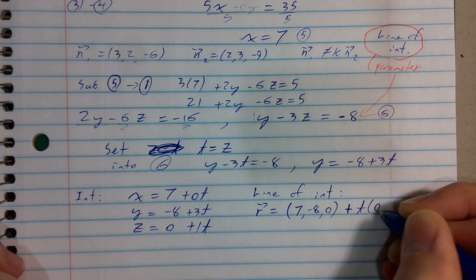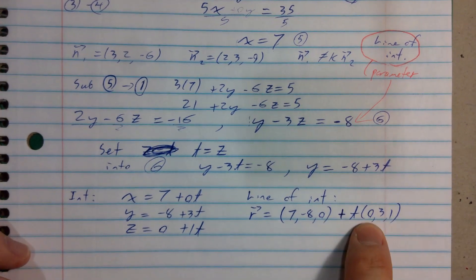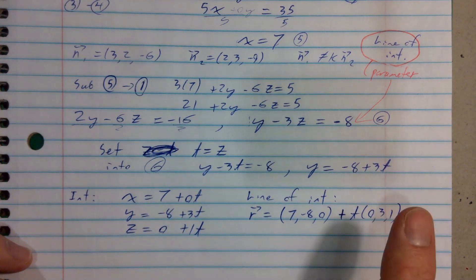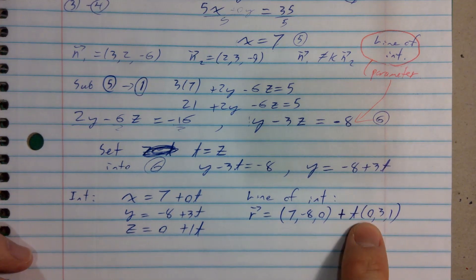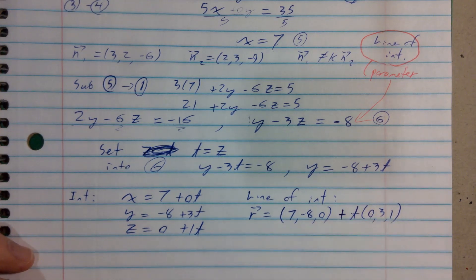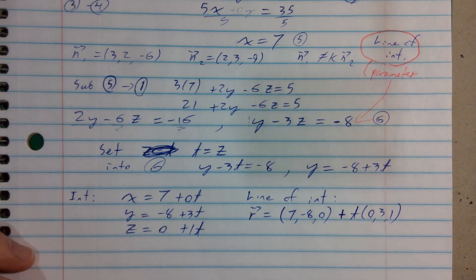And then here comes the direction vector, plus t, 0, comma 3, comma 1. And notice, because you have a 0 component in the x direction of your direction vector, that means that on this line, your x value doesn't change. It is parallel to the yz plane, I suppose. All right.